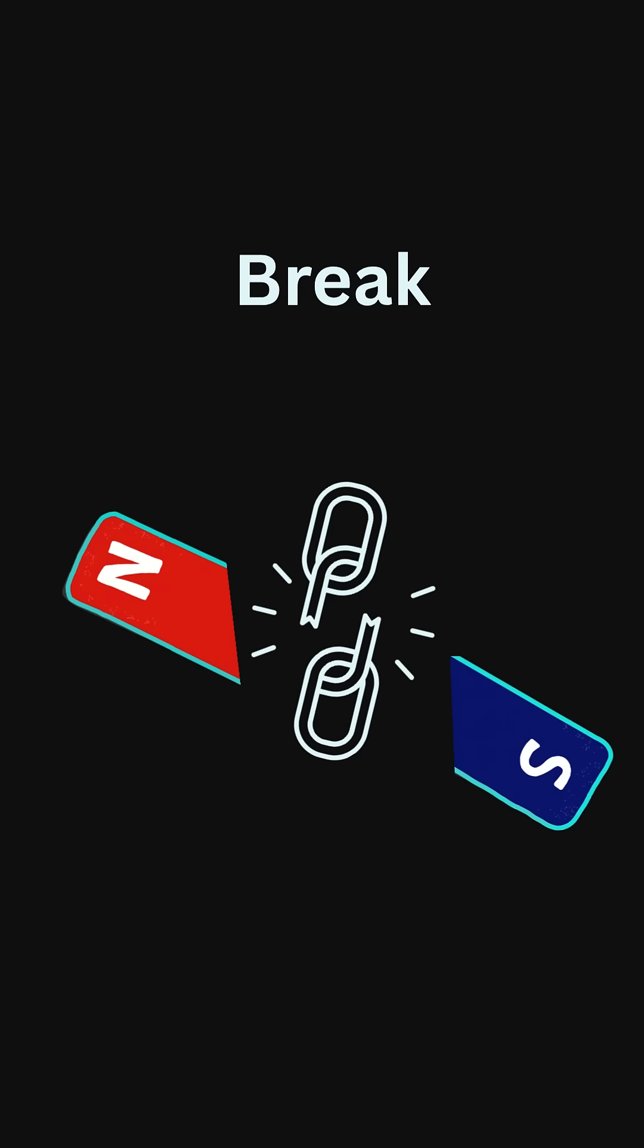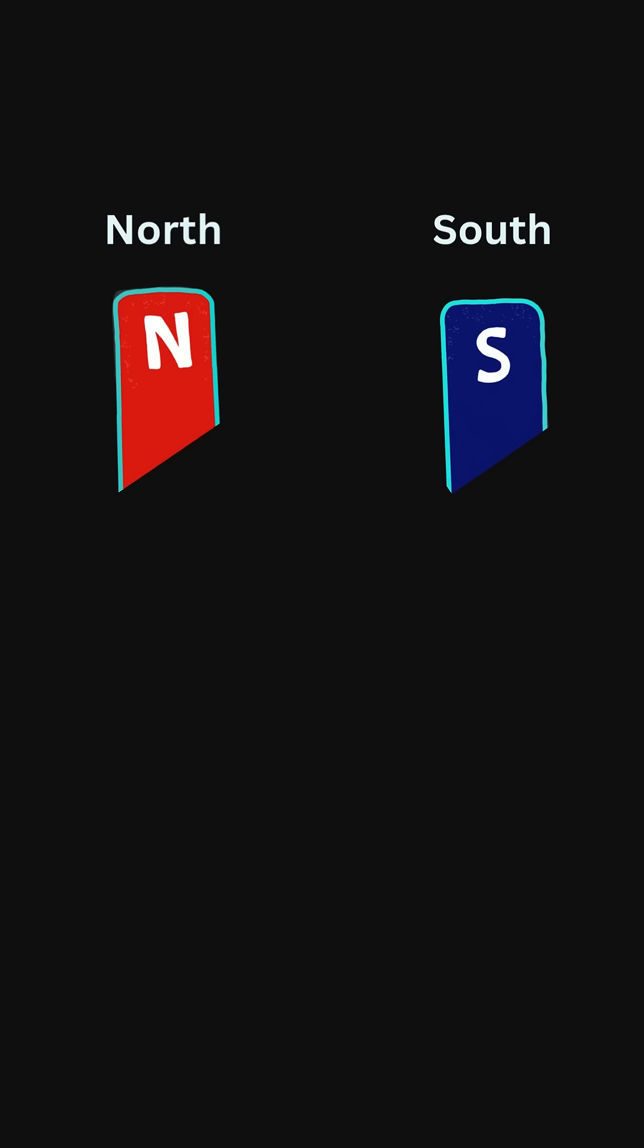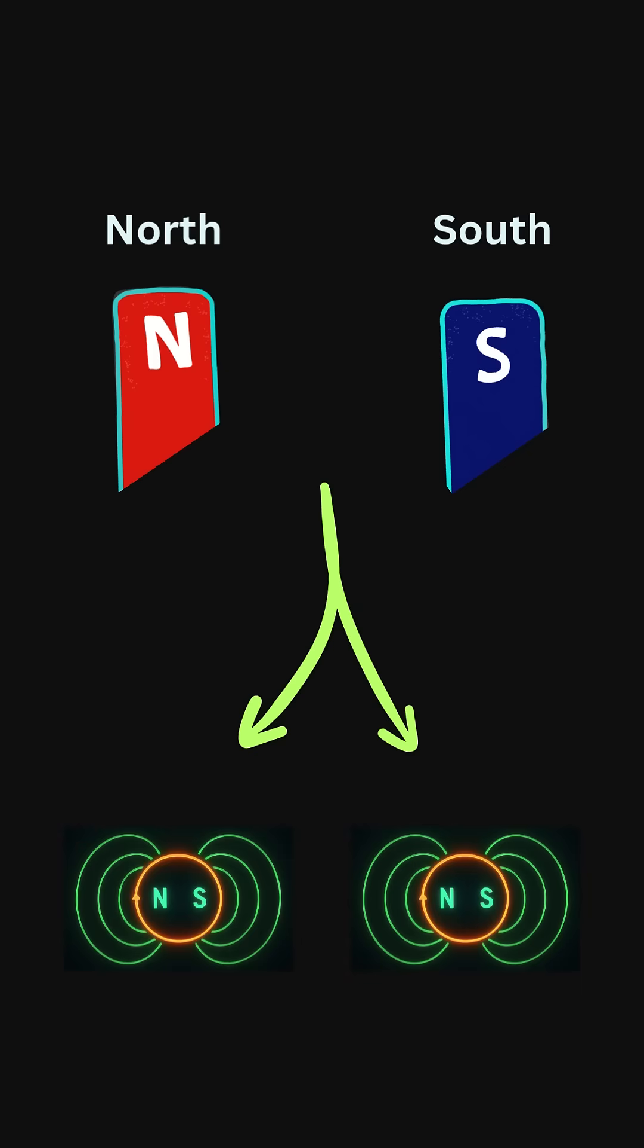Break a bar magnet in half, and instead of getting a pure north or pure south, you'll just create two smaller dipoles.